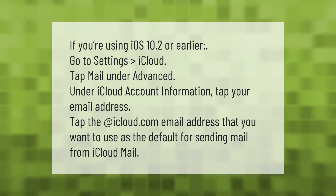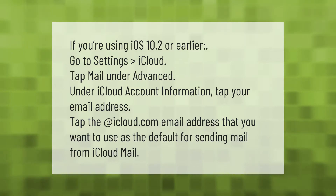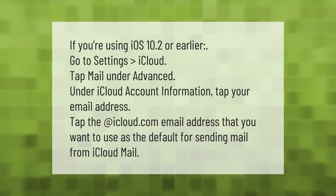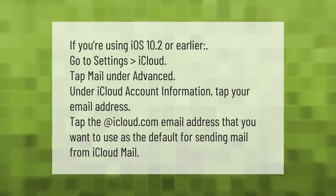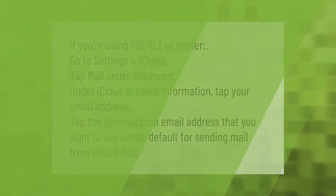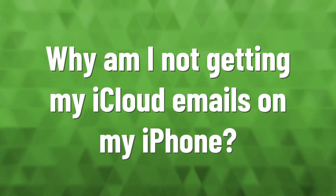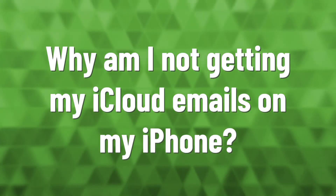If you're using iOS 10.2 or earlier, go to Settings > iCloud, tap Mail under Advanced under iCloud account information, tap your email address, then tap the @iCloud.com email address that you want to use as the default for sending mail from iCloud Mail.